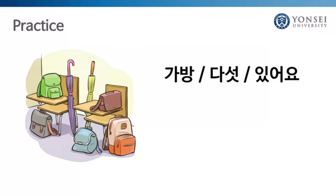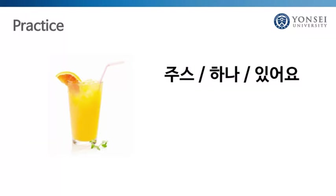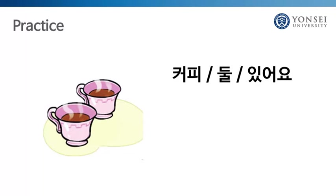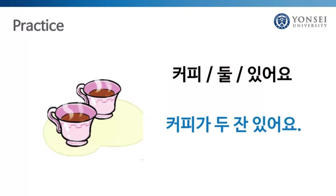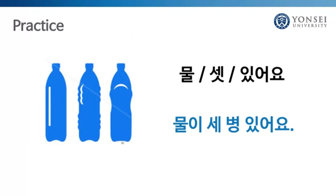Now it's your turn to practice. Look at the picture and say how many there are by using the counting units. 가방 다섯 있어요 → 가방이 다섯 개 있어요. 주스 하나 있어요 → 주스가 한 잔 있어요. 커피 둘 있어요 → 커피가 두 잔 있어요. 물 셋 있어요 → 물이 세 병 있어요.